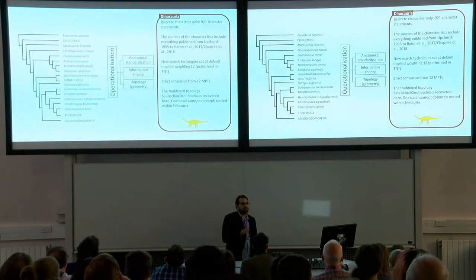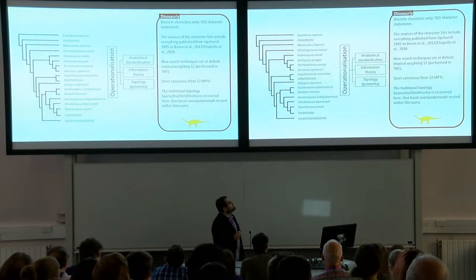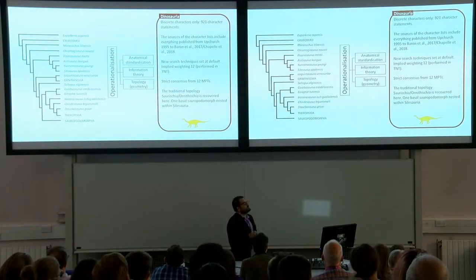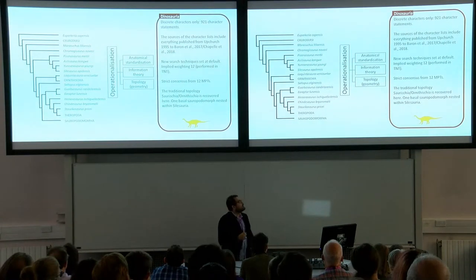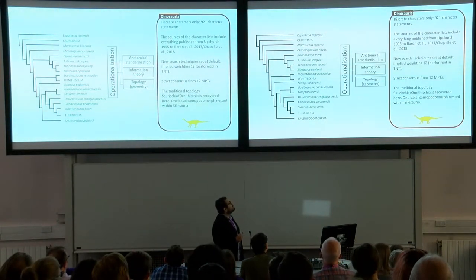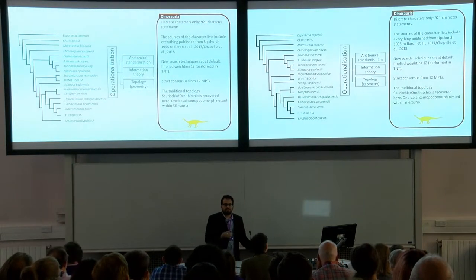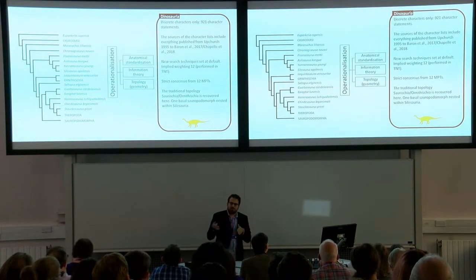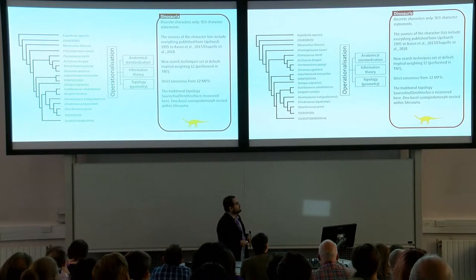I did that using three different approaches. One was anatomical standardization. The second one was information theory to assess redundancy in a more logical way, considering characters as a source of information. And then topology, which is a branch of geometry that deals with the inherent properties of any geometric body.